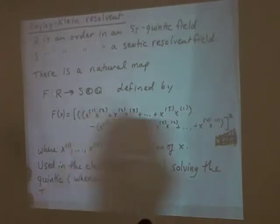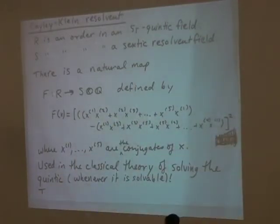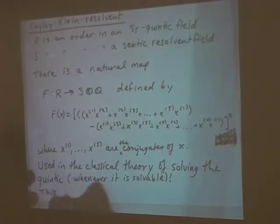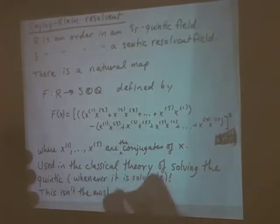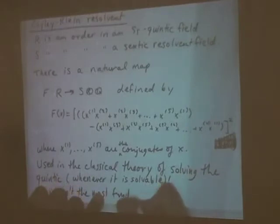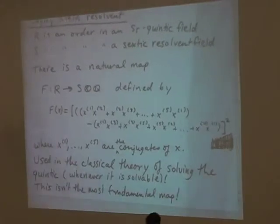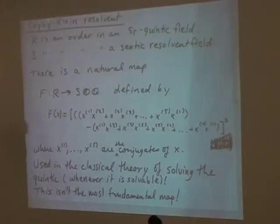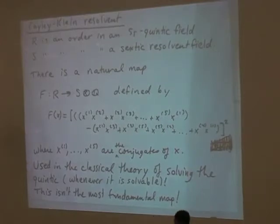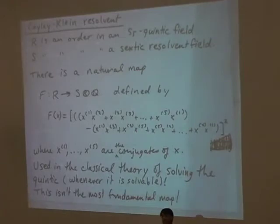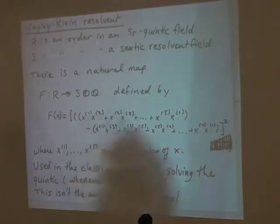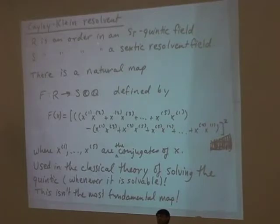However, this is a very natural way to make six things from five things, but it actually isn't the most fundamental map. The most fundamental map was sort of missed in the classical literature. One reason is that in solving polynomial equations they were looking for polynomial maps. It turns out the most fundamental map is not just a polynomial map — it's a map from R to wedge 2 of S.